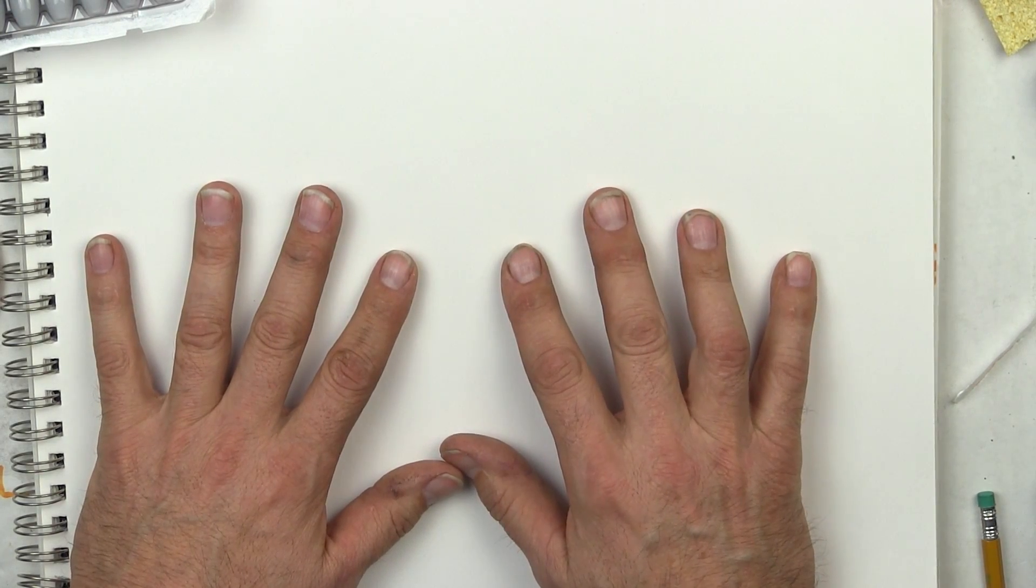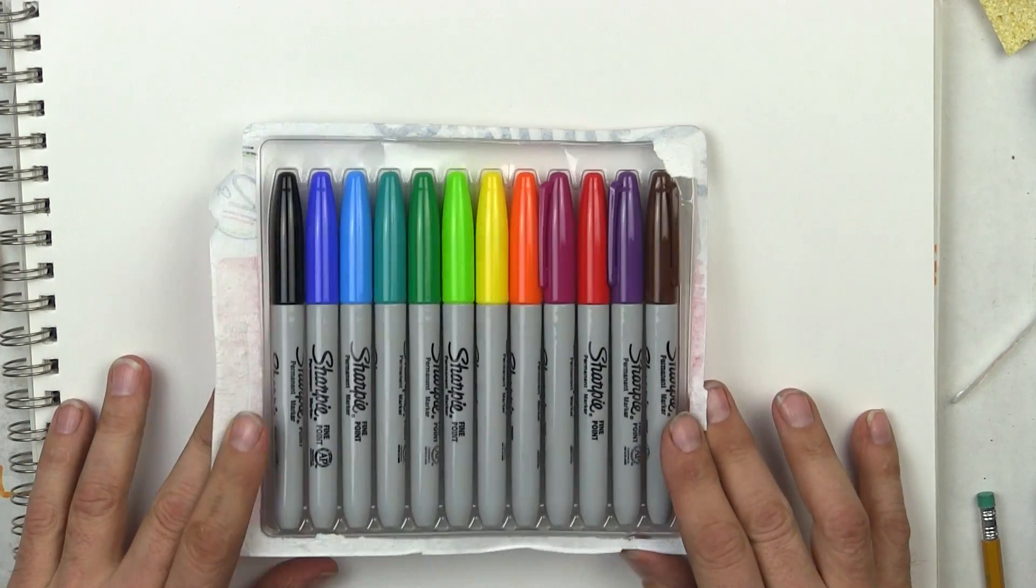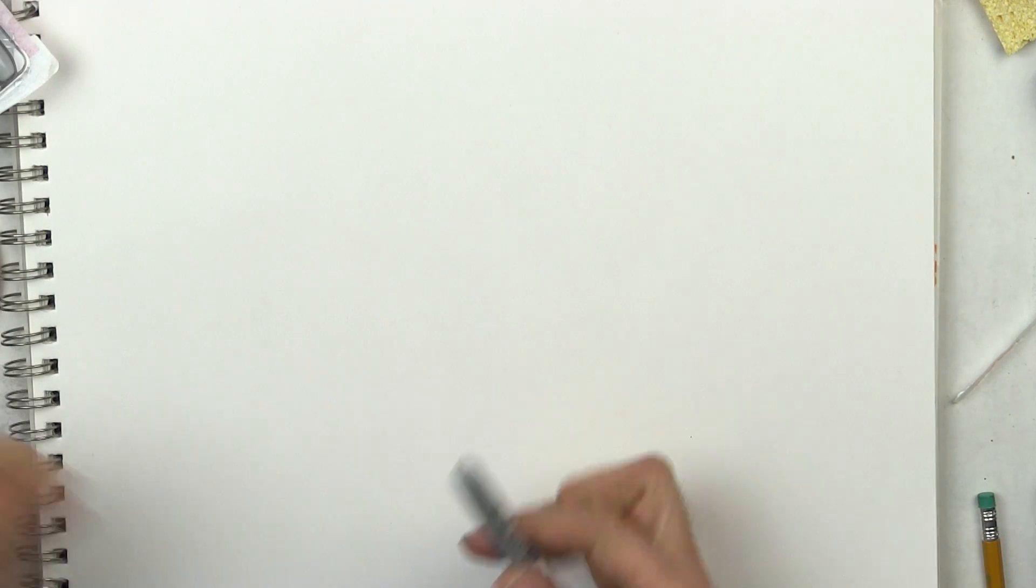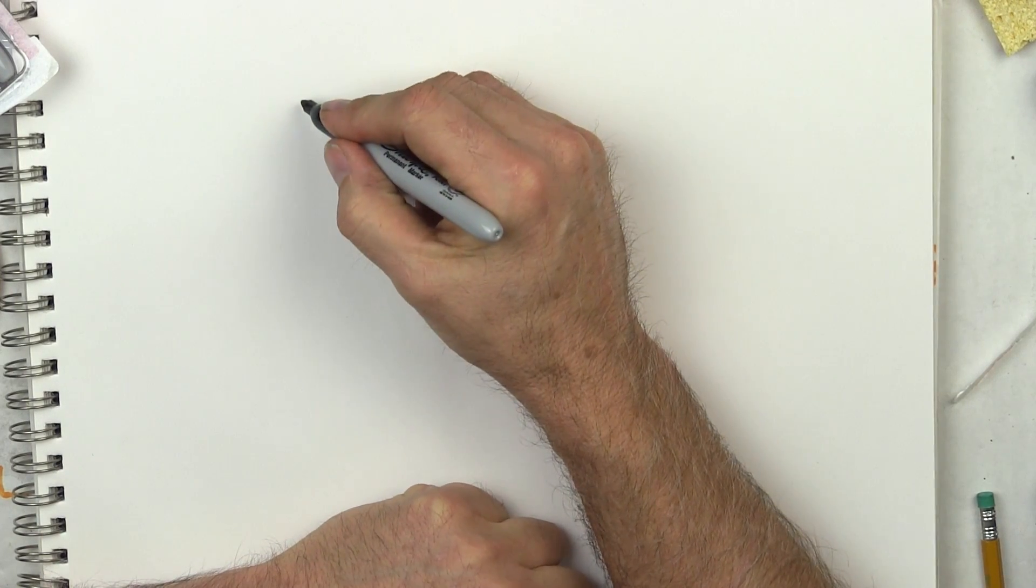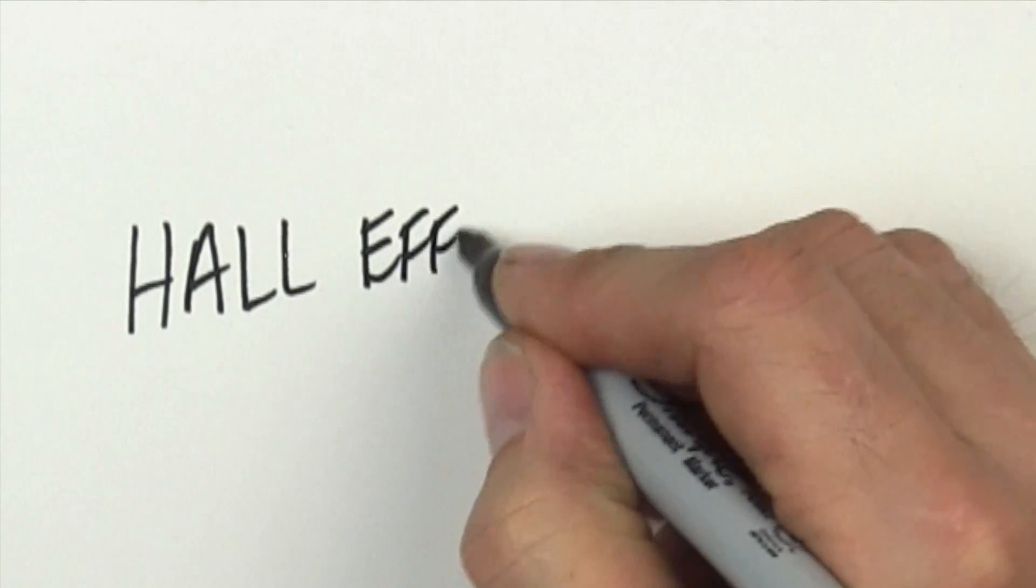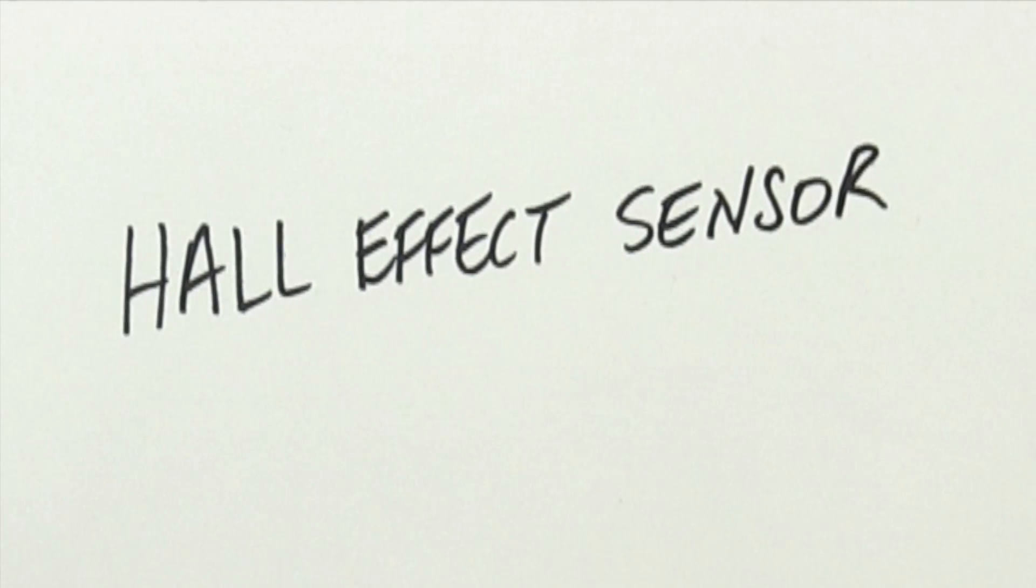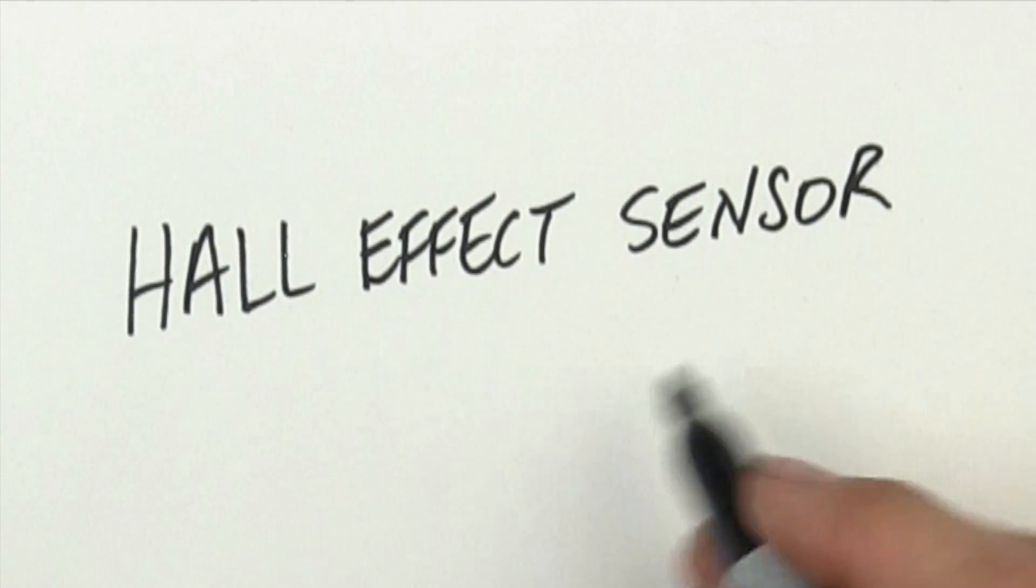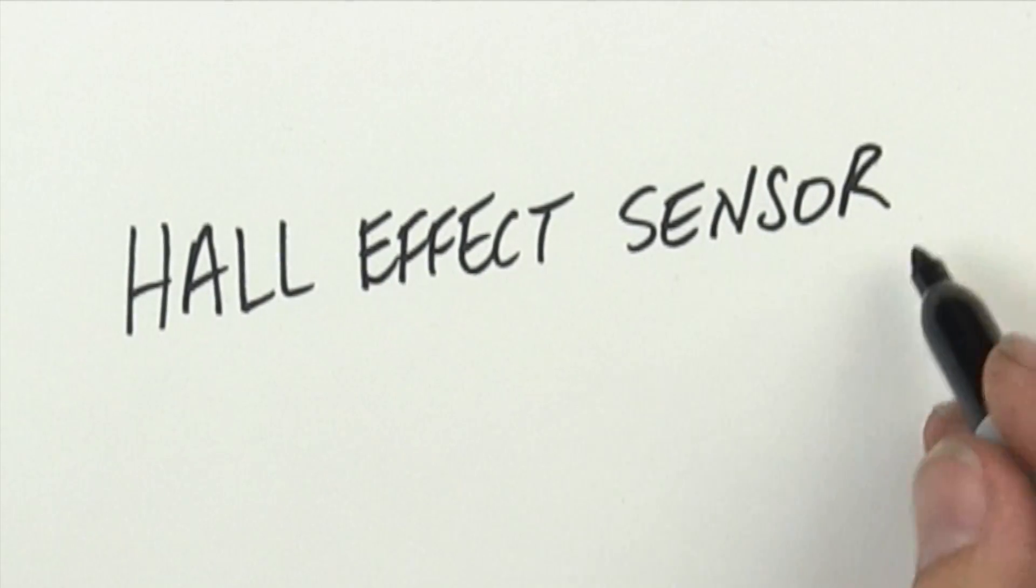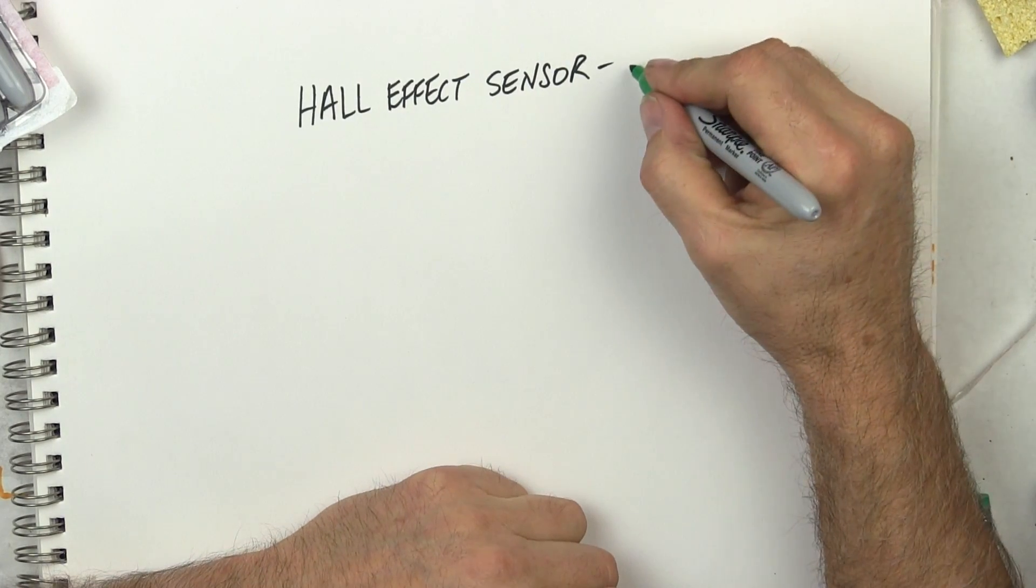The first thing I need to let you know is I got new markers. Okay, let's start with a general concept. A Hall effect sensor is obviously a sensor because it senses something, and in this case what it senses is a magnetic field.